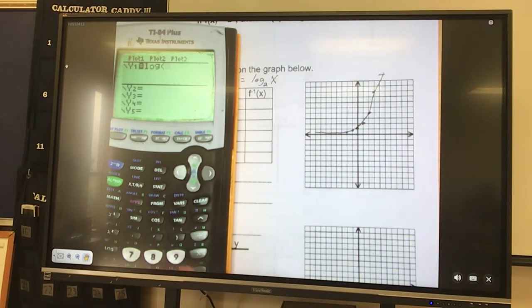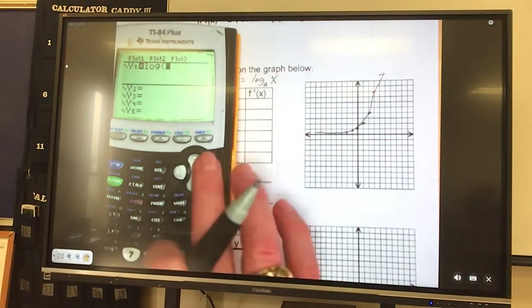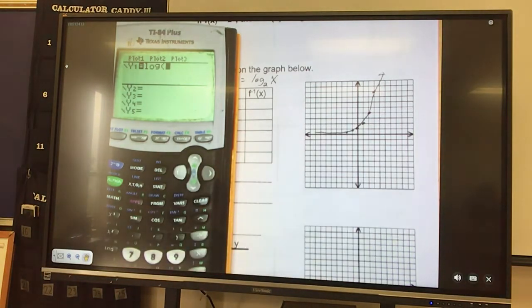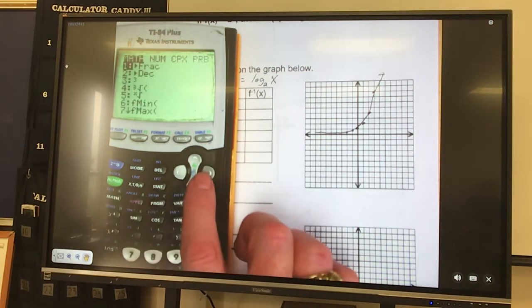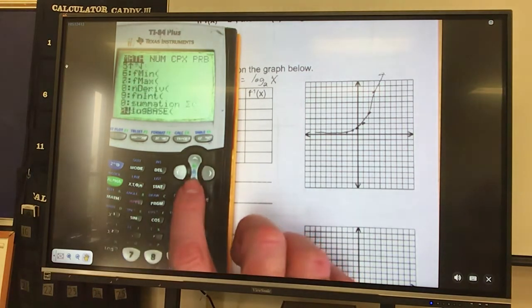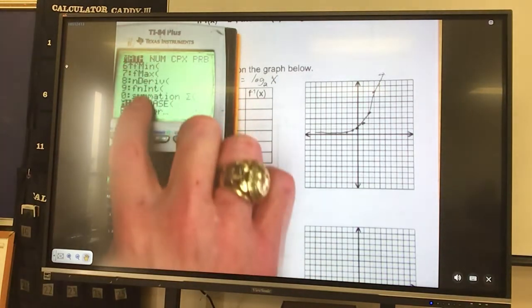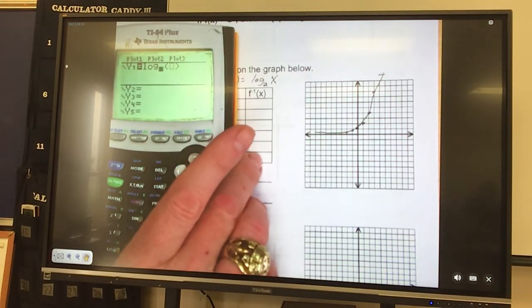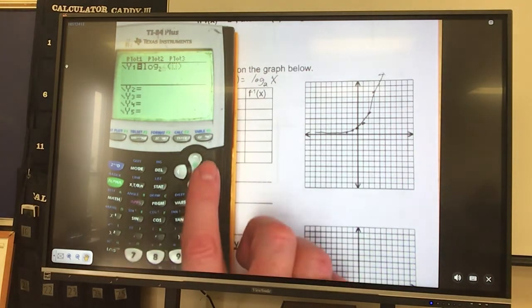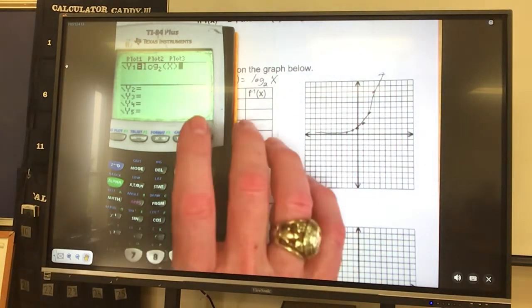So here's y equals, clear. Hit log. And oh, we need a log base 2. With these calculators, let's see. Clear. Math. I'm learning it as some of you guys. Here we go. So if I hit math, in the math menu it says log base. Hit that guy. Yay. Everybody can see it there? So I put in log base 2, move over, put x.